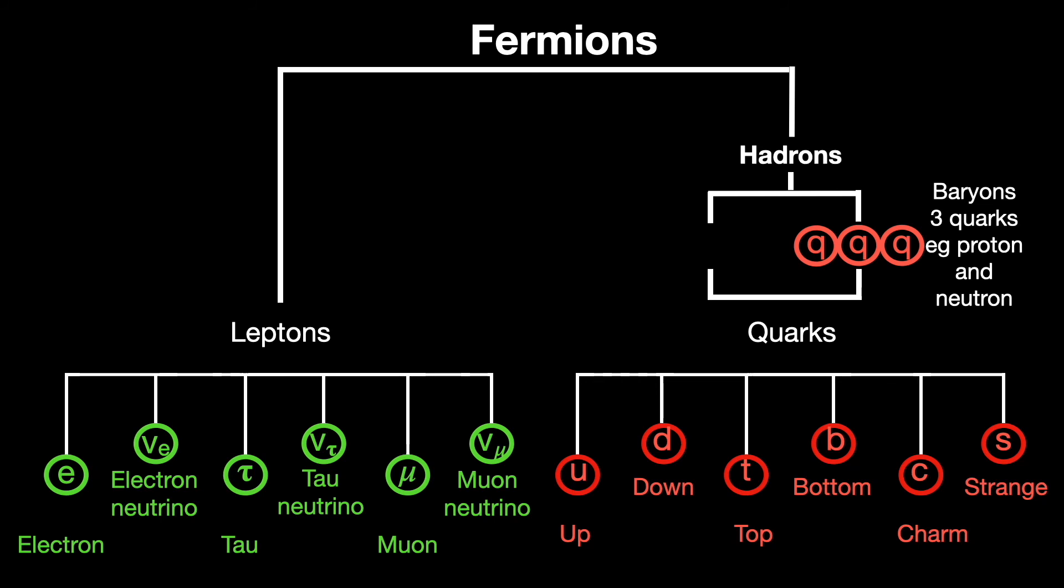Within a baryon, there are three quarks. Protons: two ups and one down. Neutrons: two downs and one up.